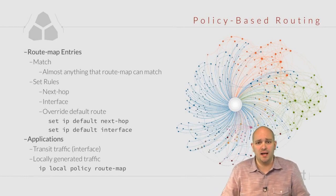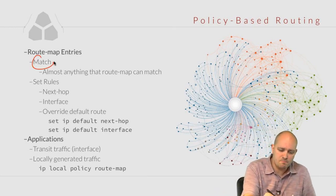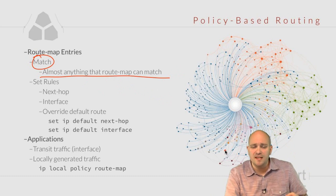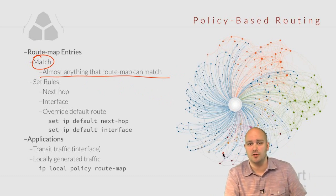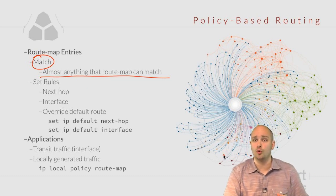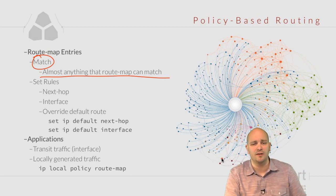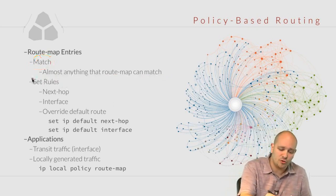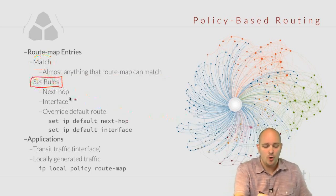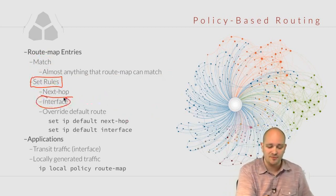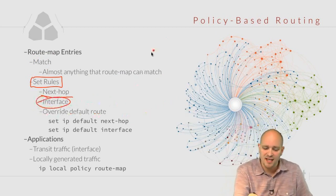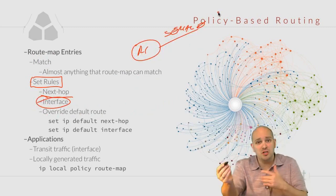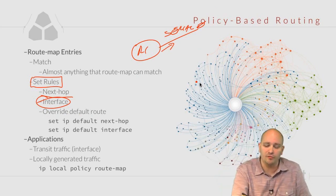That was a simple example. Policies can be more involved. In the route map, the match statement can match almost anything: the source interface, a combination of source and destination IP using an extended access list, or specific traffic types like Telnet, ping, or HTTP. For the set rules, we can specify a next hop as shown, or simply specify an exit interface — for example, serial 0 — and whatever is on the other side, the traffic exits that interface regardless.